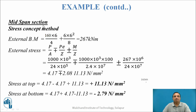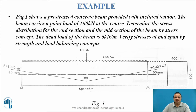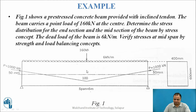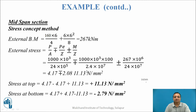Now for the mid-span section: the tendon has an eccentricity of 100 mm below the neutral axis. Therefore P×e/Z induces bending compression at the bottom and bending tension at the top — so P×e/Z is negative at top and positive at bottom.